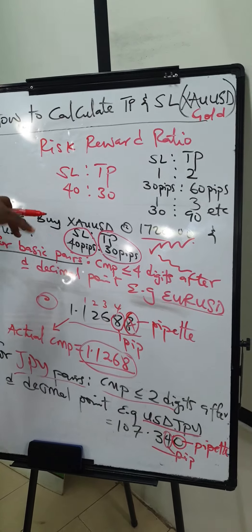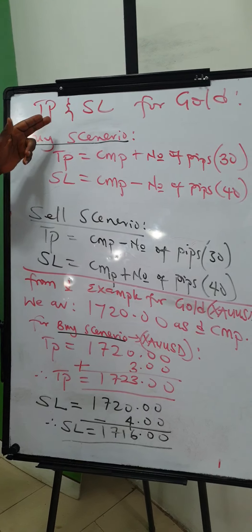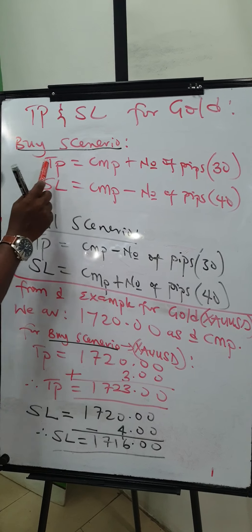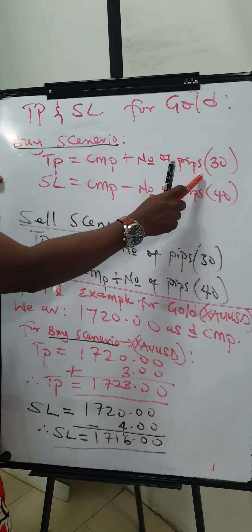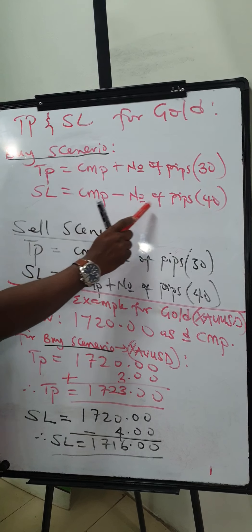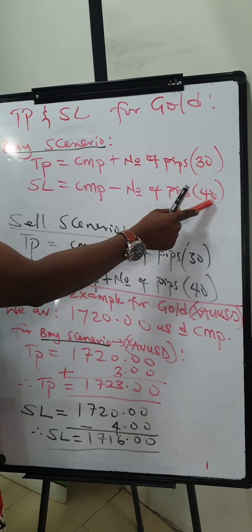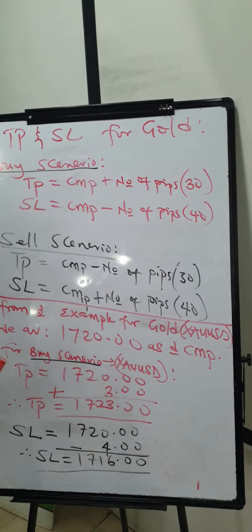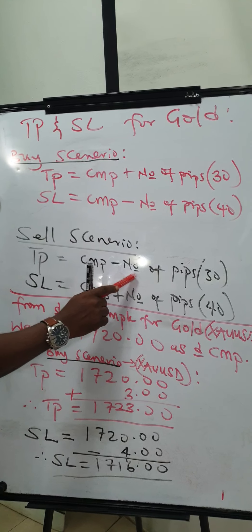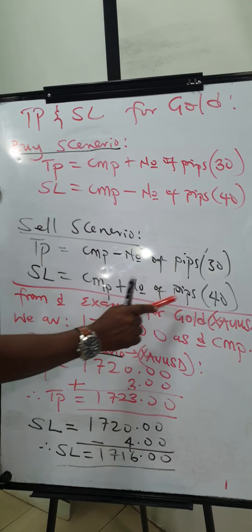Now for gold, let's do the calculation. For the buy scenario: TP equals current market price plus number of pips — we said 30 pips. Stop loss equals current market price minus number of pips — we said 40 pips. So we are risking 40 pips in order to make 30 pips back. For the sell scenario: TP equals current market price minus 30 pips, and stop loss equals current market price plus 40 pips.